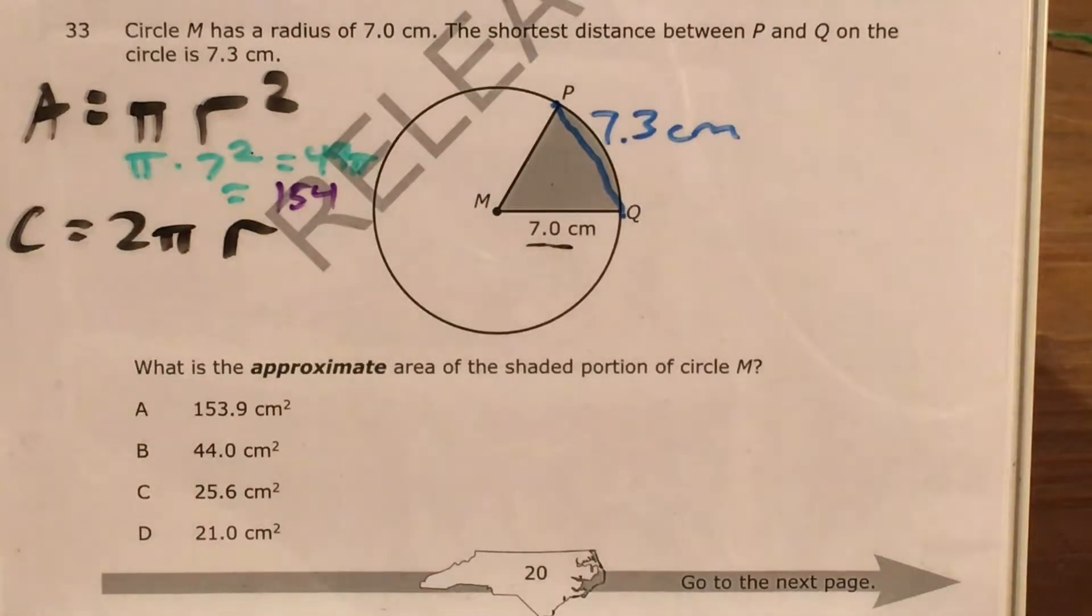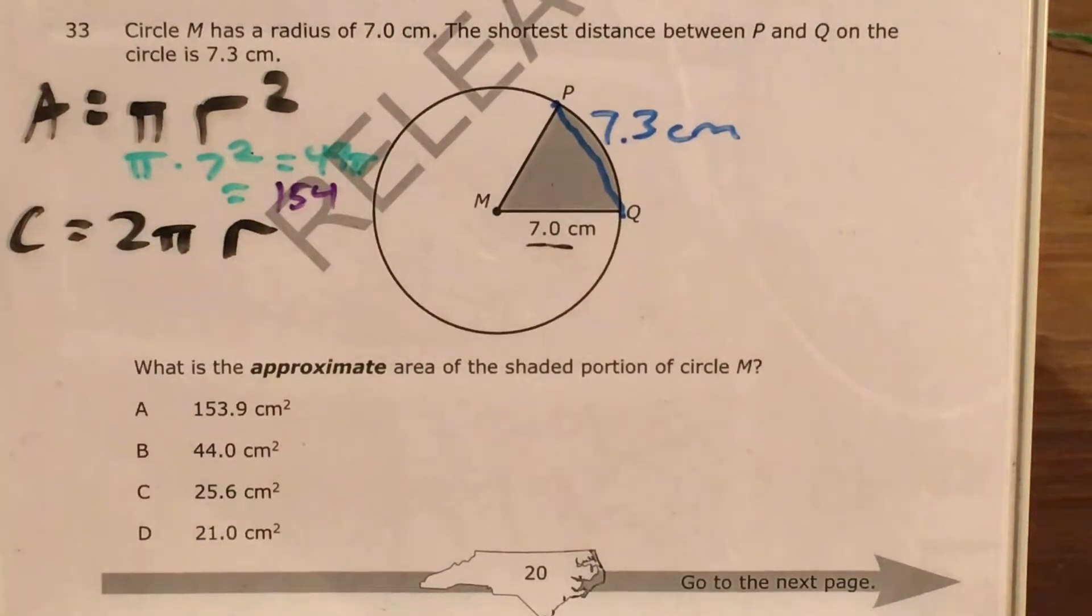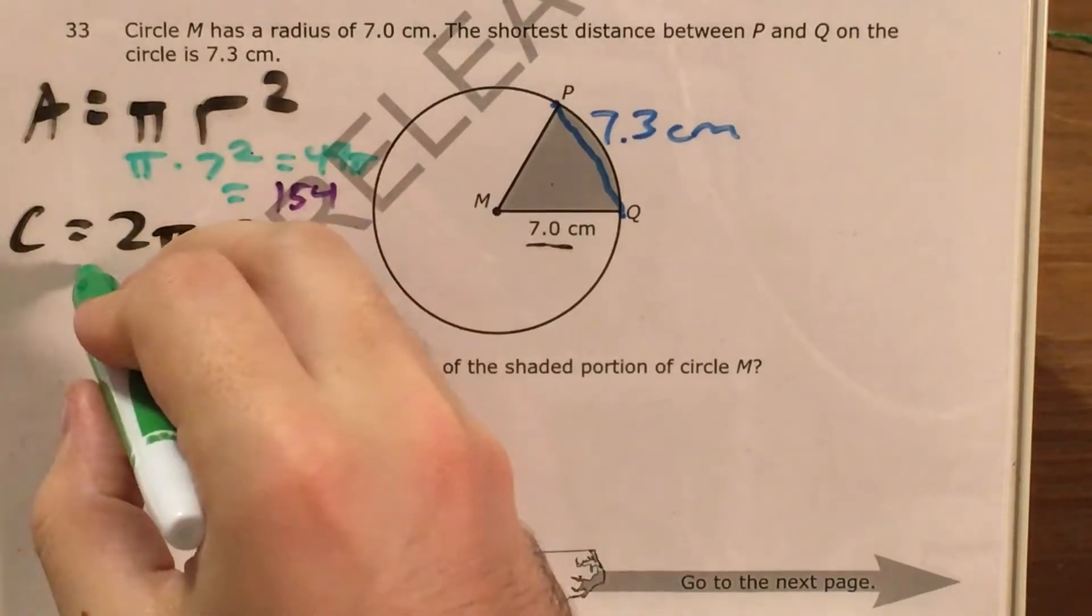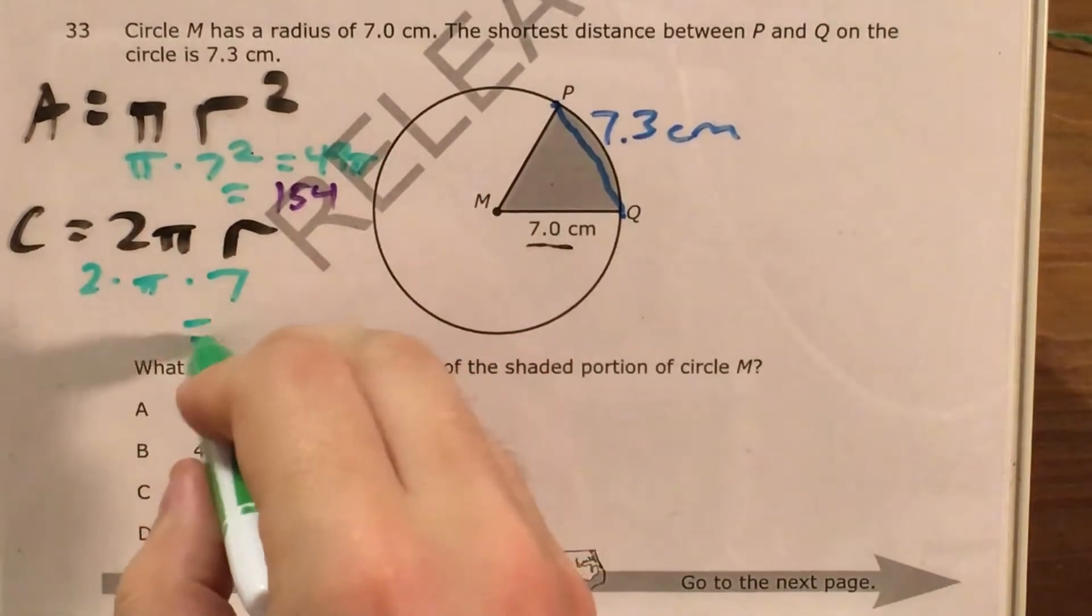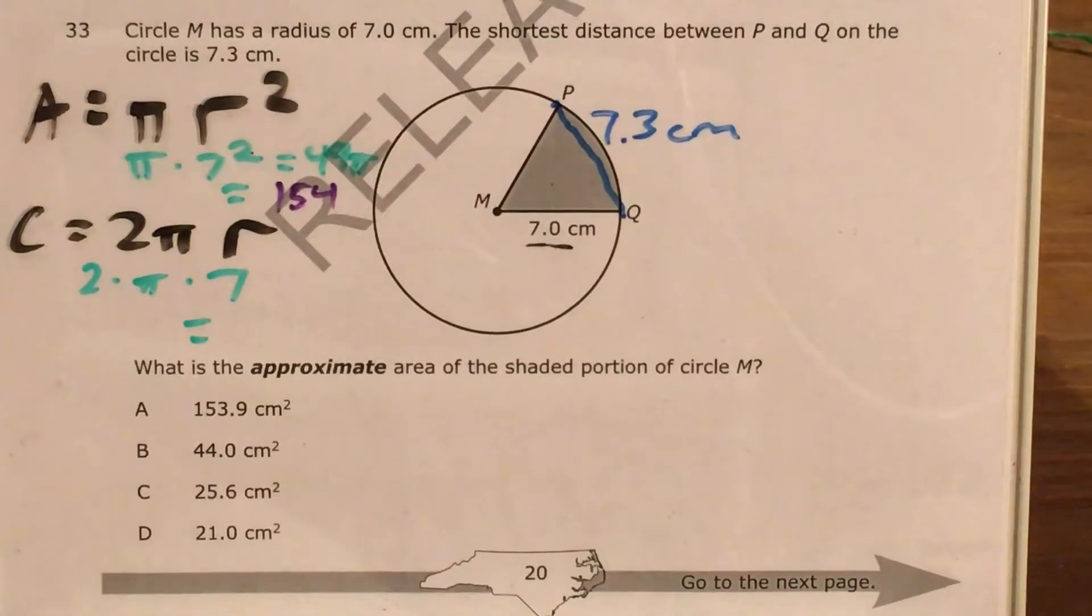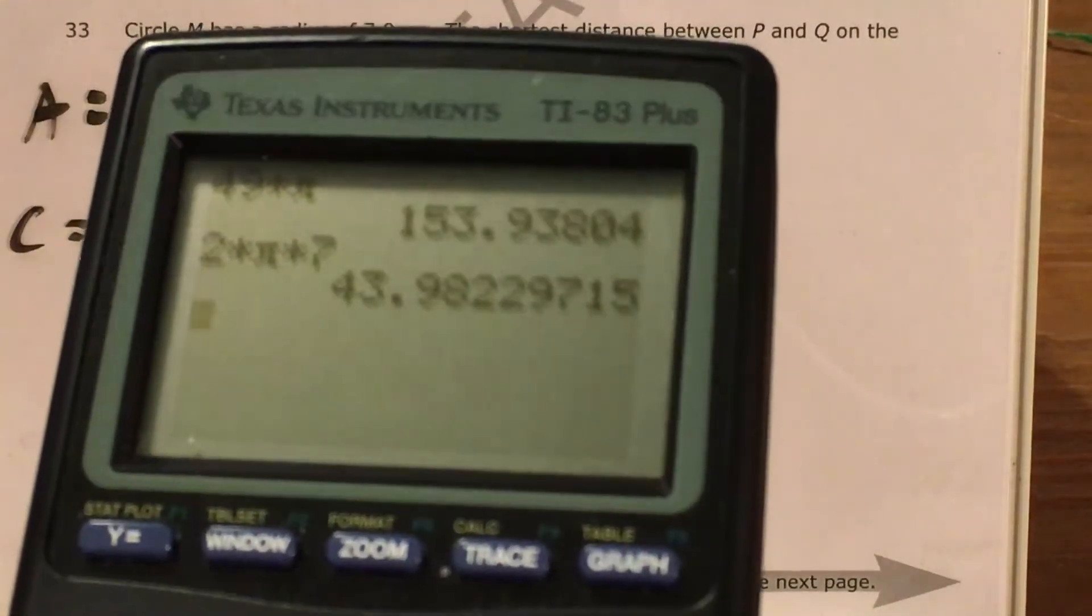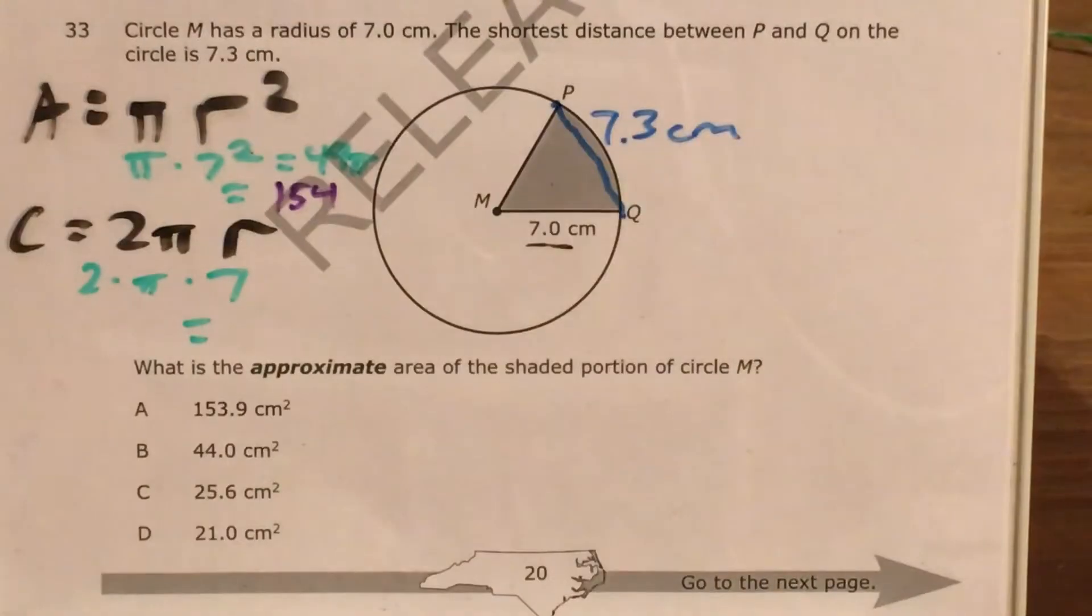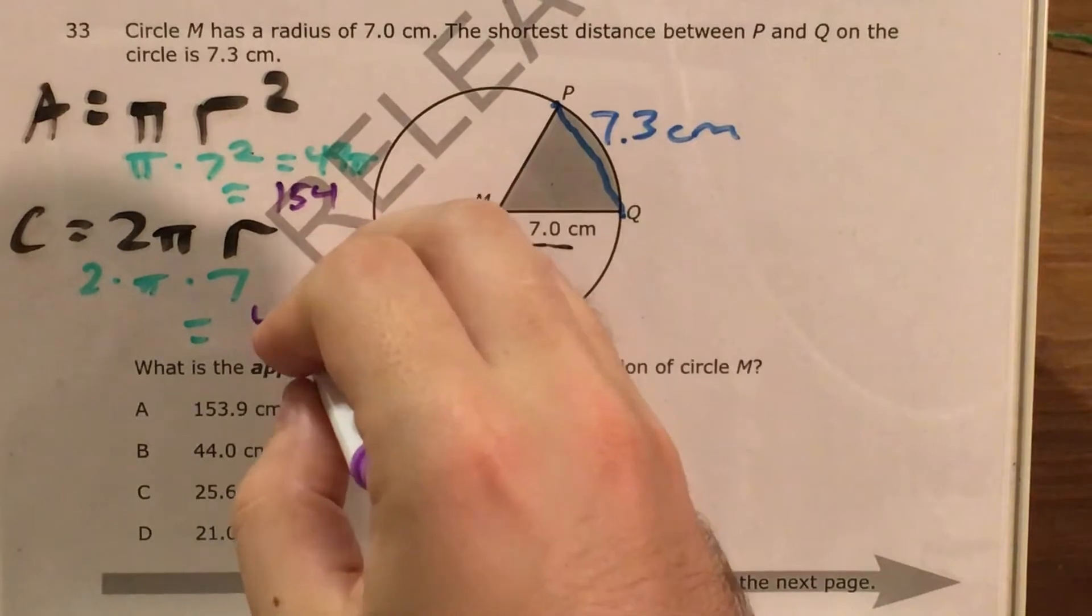But now to try to find my circumference, I'm looking for 2 times pi times my radius. Once again, my radius is 7, so this is 2 times pi times 7. And that is going to get me 2 times pi times 7, which is almost exactly 44.